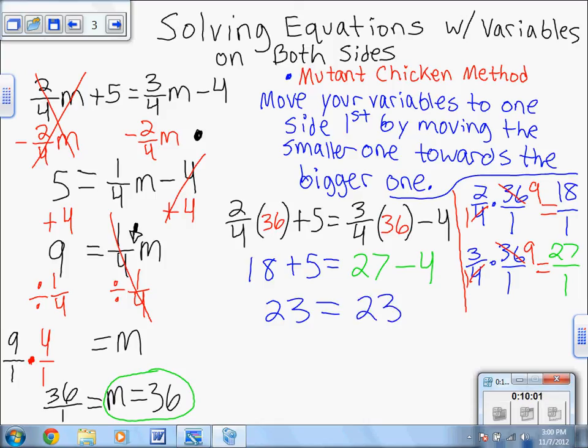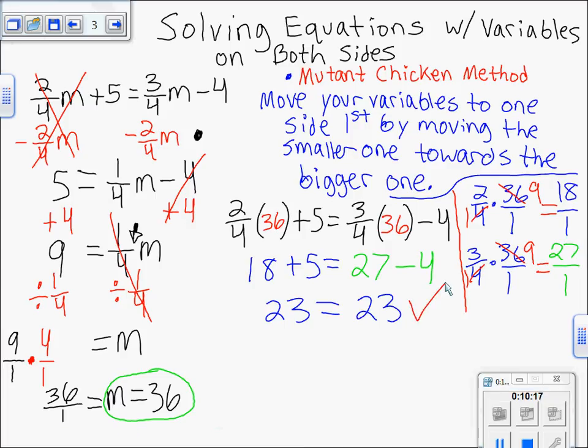Now, I said 27 minus 4 equals 23. I didn't just say that because the other side said 23. You never assume. You should actually check. So let's see. On both sides, we have 23 equals 23. We ask ourselves, is that a true statement? Well, we all know that 23, of course, is equal to 23. So that tells you that is most definitely a true statement, which tells you 36 is the correct solution to your problem.